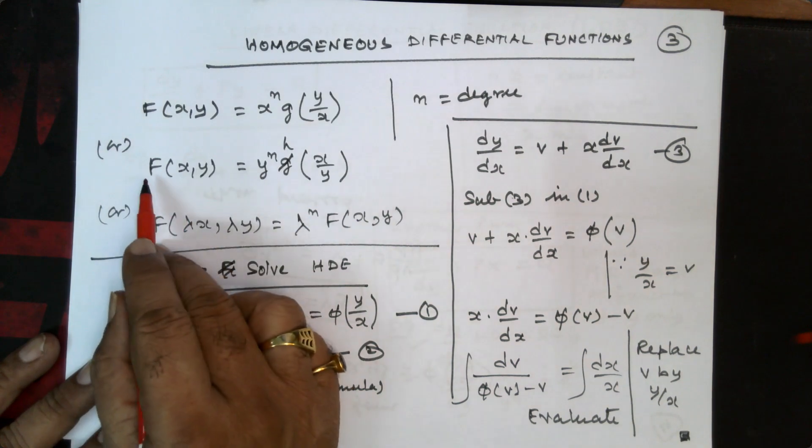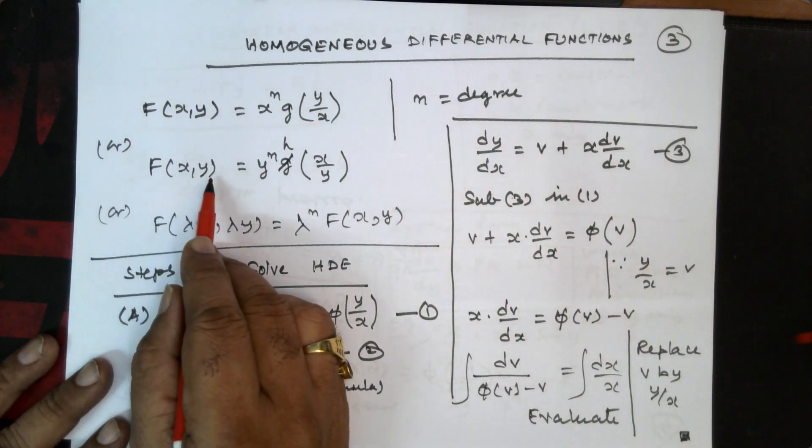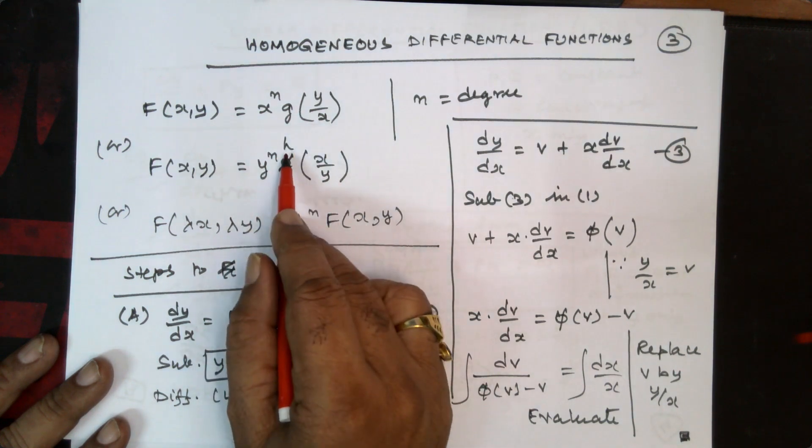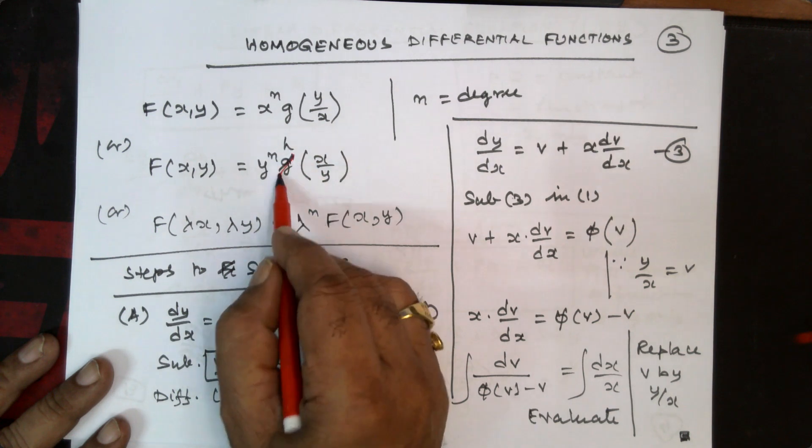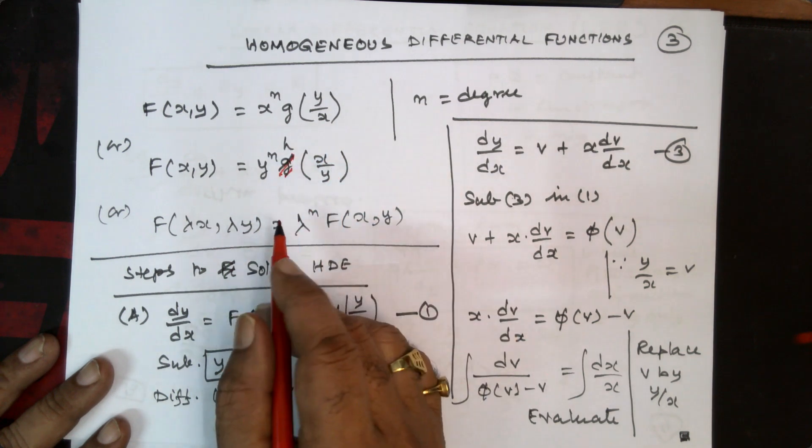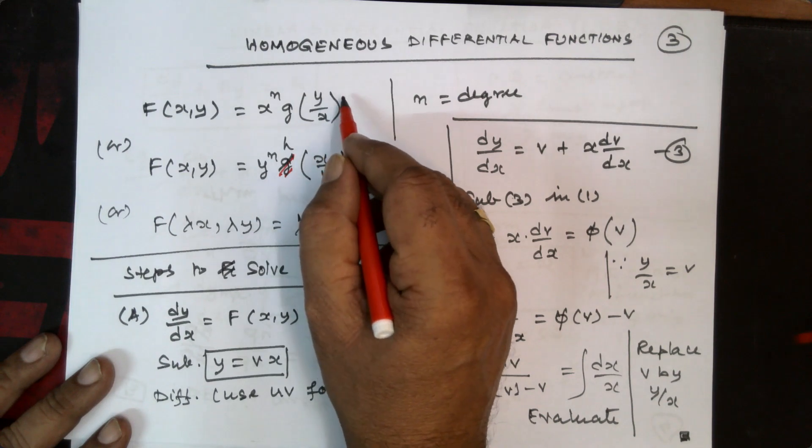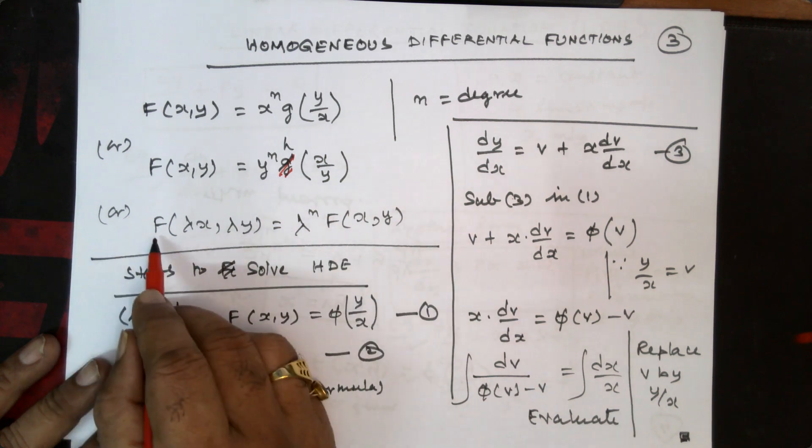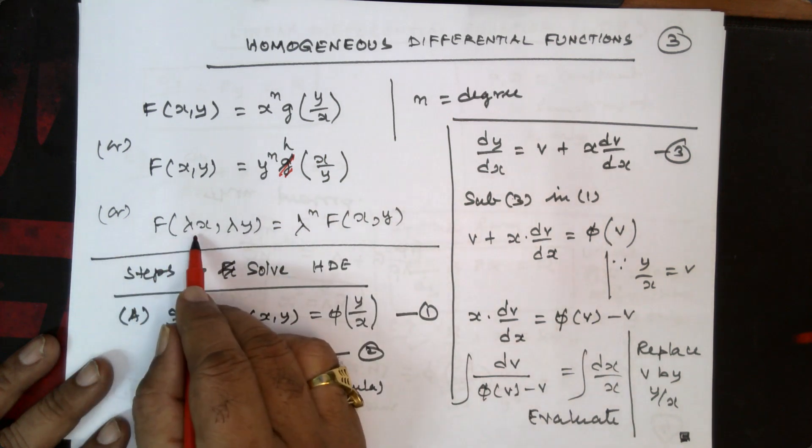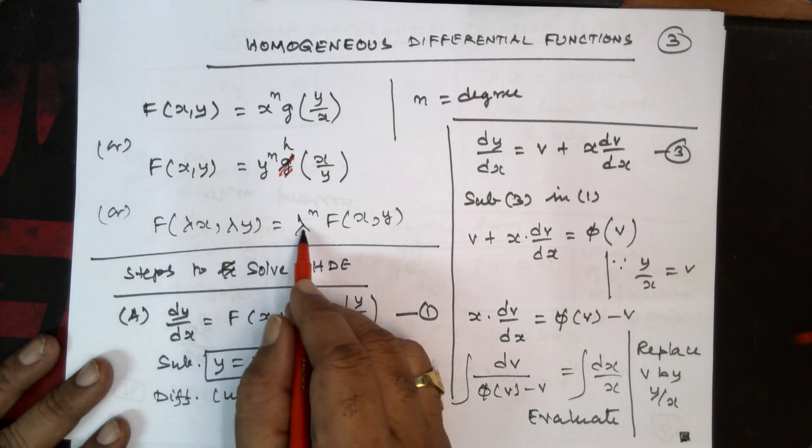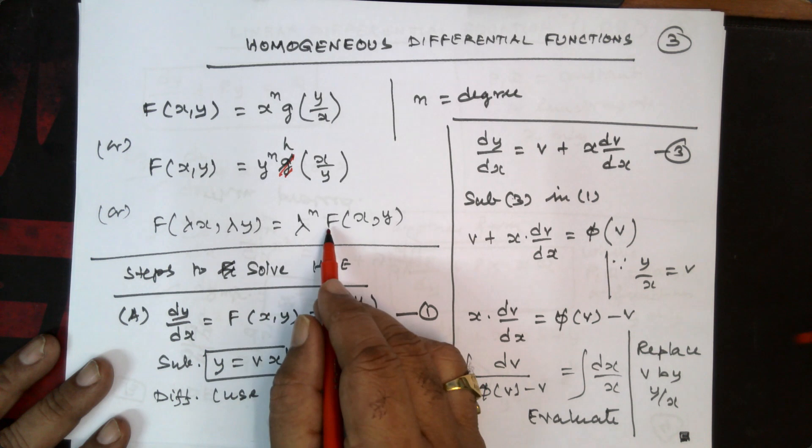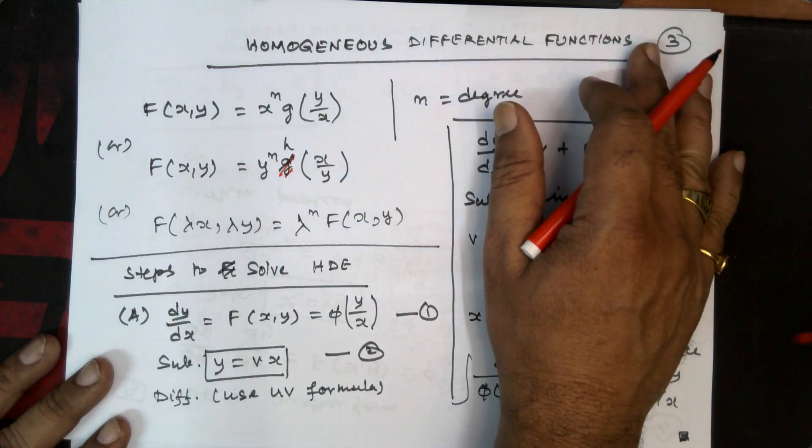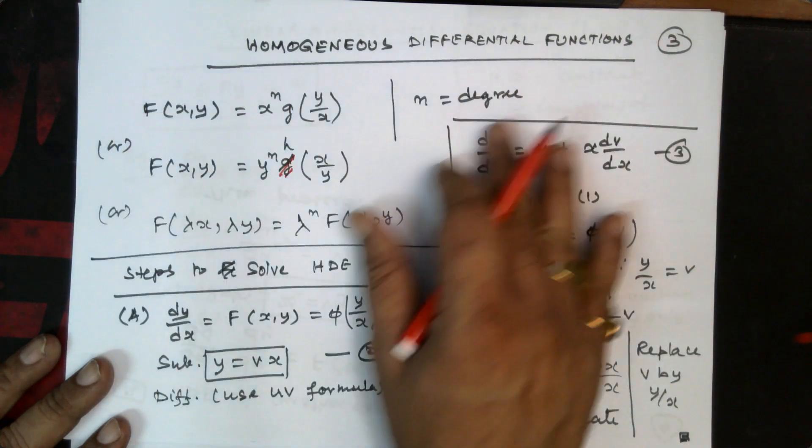Or it can be f of x, y equals y power n, you can distinguish by a different type of function as h, so h of x by y. That is either it can be of y by x form or x by y form. Or it can be of lambda, a function of lambda x, lambda y equals lambda power n into f of x, y. So the homogeneous differential equations can be represented in various ways.